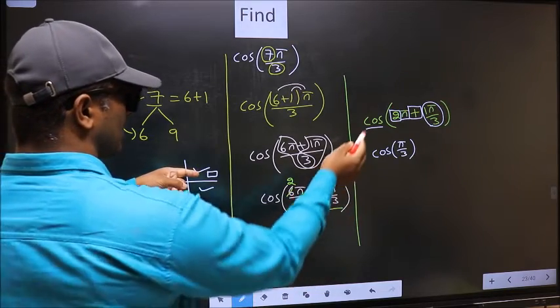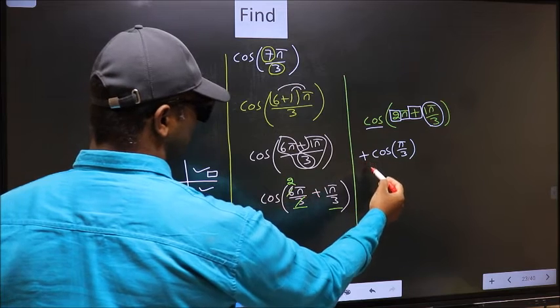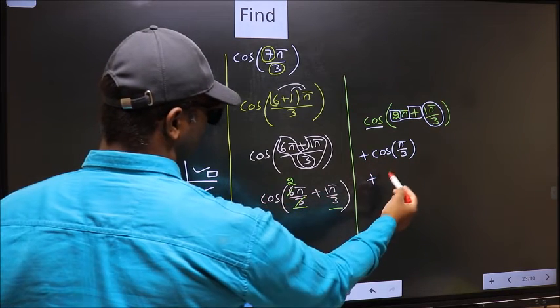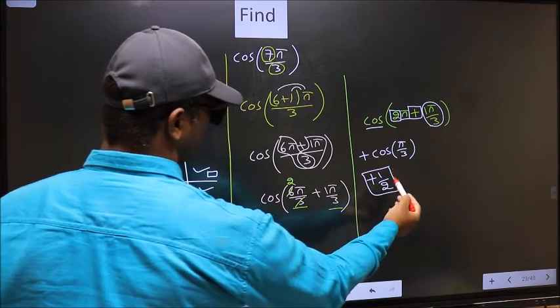So, the angle lies in the first quadrant. And in the first quadrant, cos is positive. So, we should put plus. So, plus cos π by 3 is 1 by 2. This is our answer.